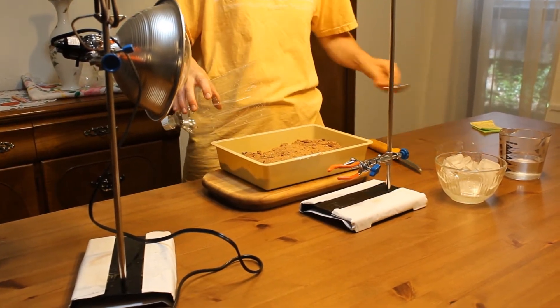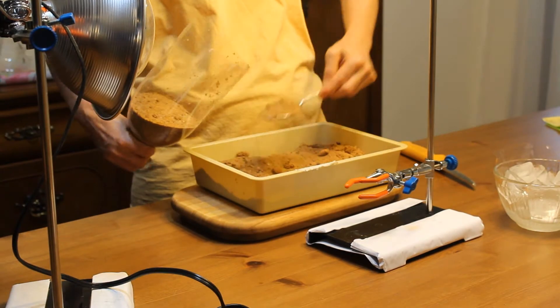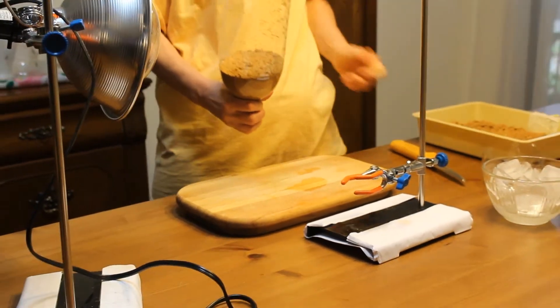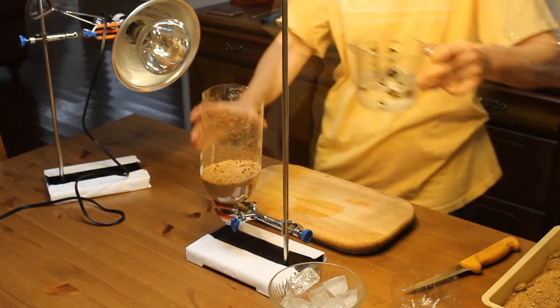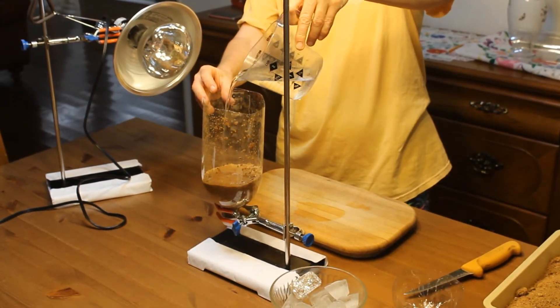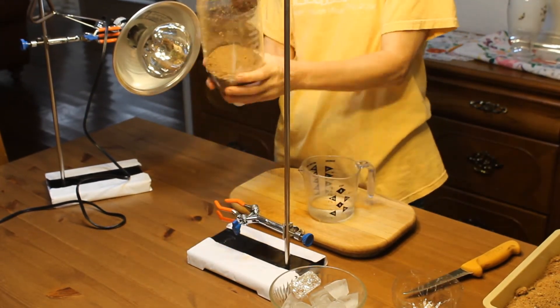We add some sand into the bottle. The sand represents the lithosphere of the Earth. Pour some water over the sand. The water represents the hydrologic system of the Earth.